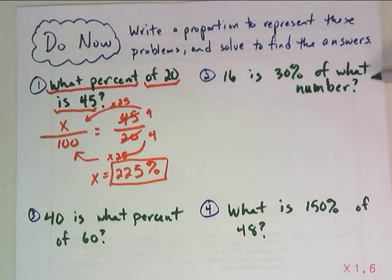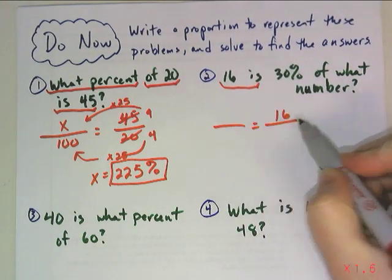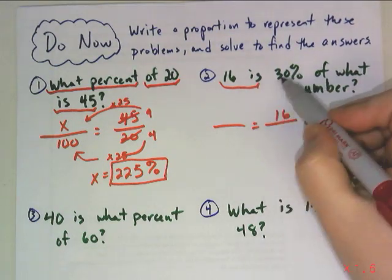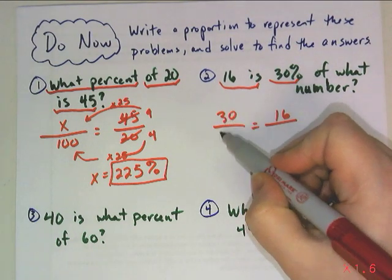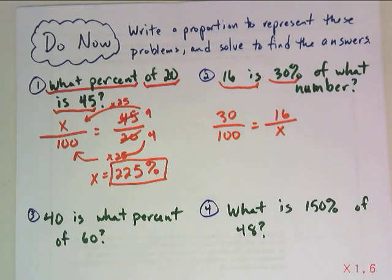16 is 30% of what number? So 16 is, that means it's going to go up top on the right-hand side, 30%, so 30 is going to go over the 100, and 'of what number', telling me this is where my x goes. Again, I might want to simplify. I can get rid of that last zero. I still don't see any nice scale factors, so let's solve this algebraically.